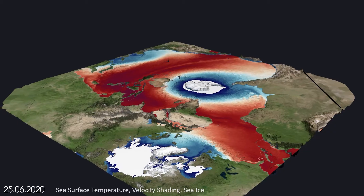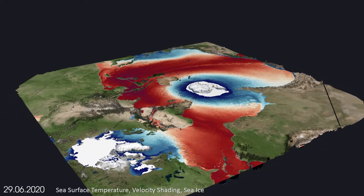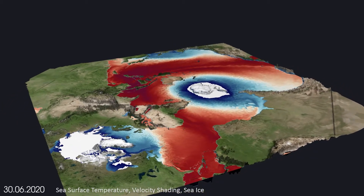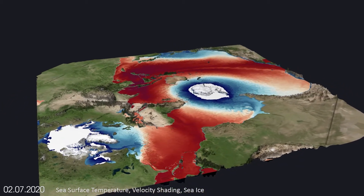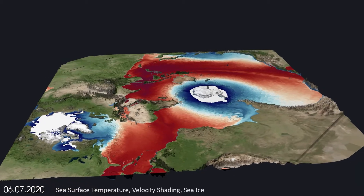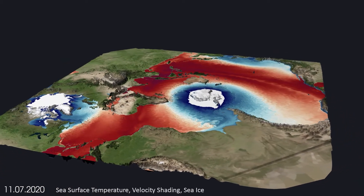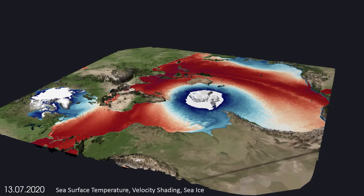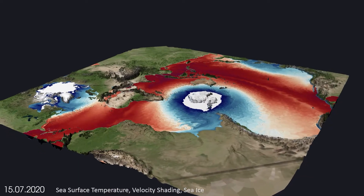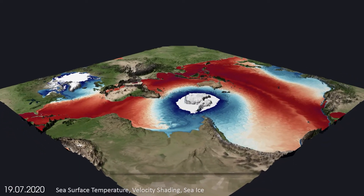Orbiting above the data, we can see the ocean's surface temperature mapped to color, with blue showing cold and red warmer water masses. Additionally, we accentuate the surface velocity of the water using a special mapping technique.